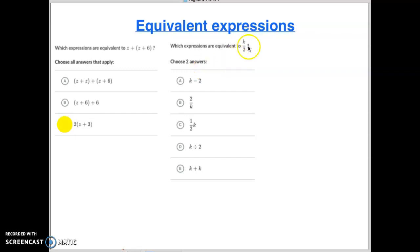So k divided by 2. Basically, if I'm dividing k by 2, I'm taking half of k if that makes sense. So k minus 2 is not the same as k divided by 2. I think you all know that.